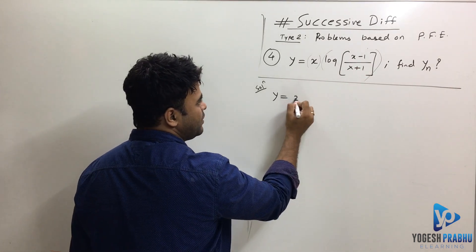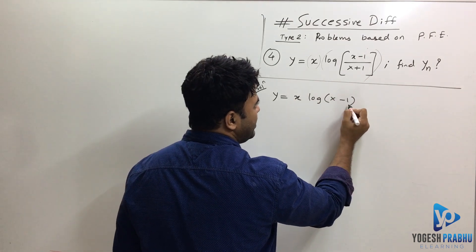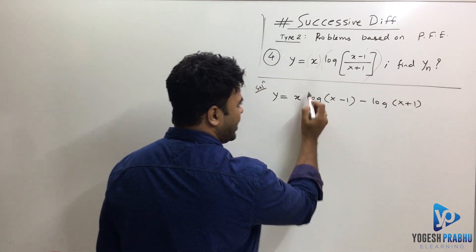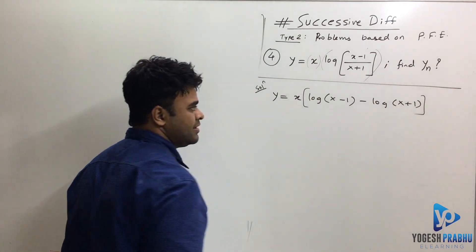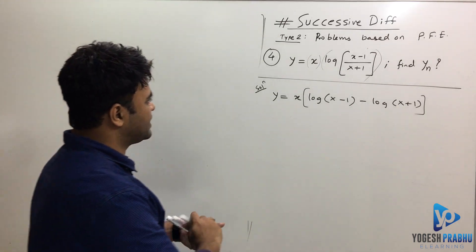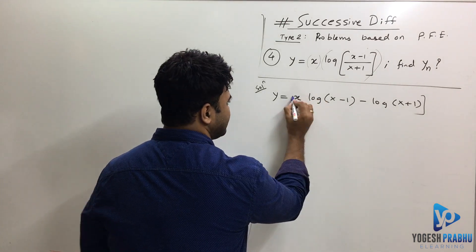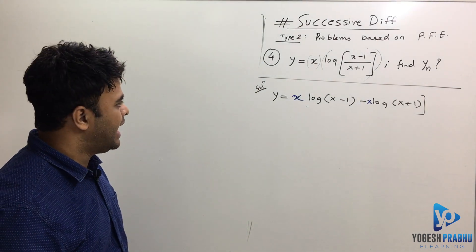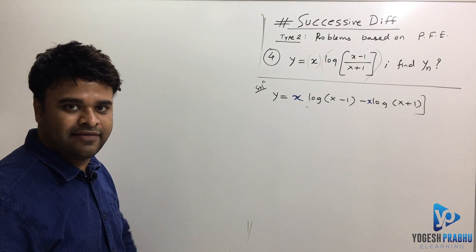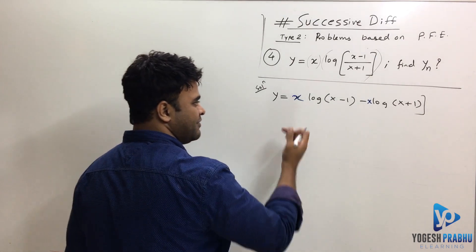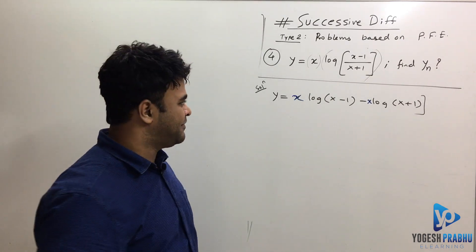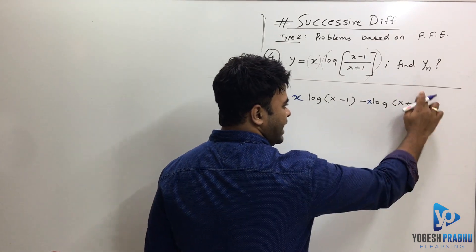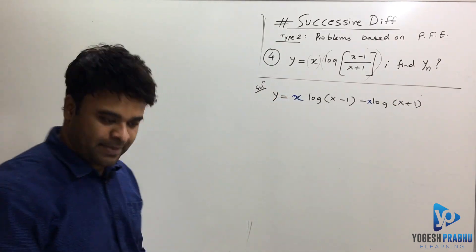So let's write: y is equal to x times [log(x−1) minus log(x+1)]. I've expanded this using the log quotient rule. If I open this bracket, x will get multiplied with each log term. Even so, this is still not in standard form, so in this case I'll simply differentiate using the u·v product rule.